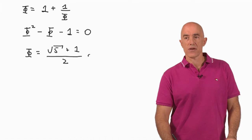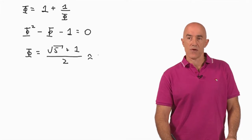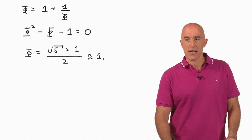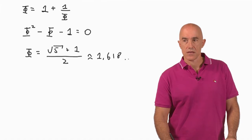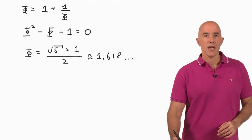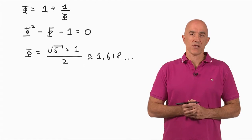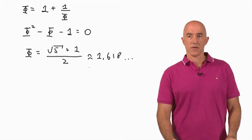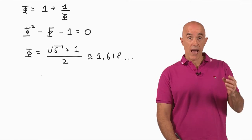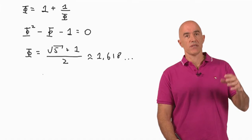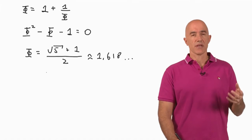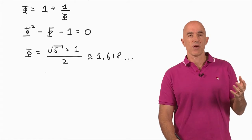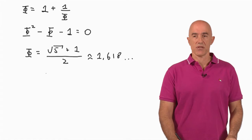And this has a numerical value. It's an irrational number, but we can approximate it: 1.618 something. And that's the famous golden ratio, just a number. We'll see why this golden ratio is divine later on in this course, and we'll also see what the connection is between the golden ratio and the Fibonacci numbers.